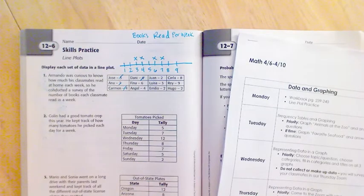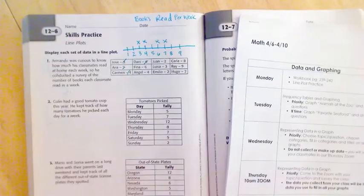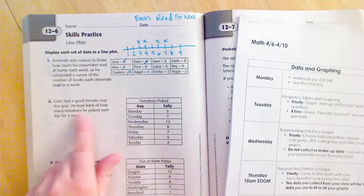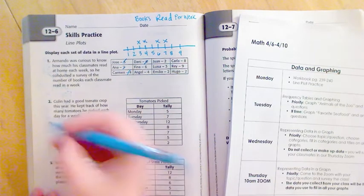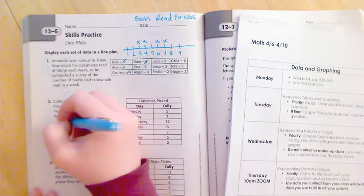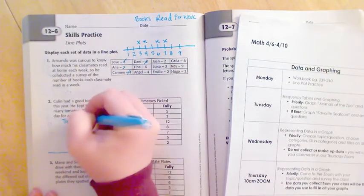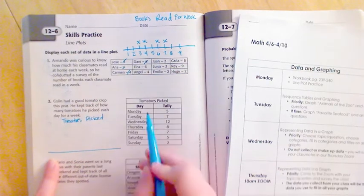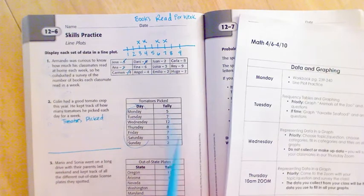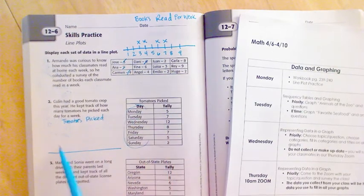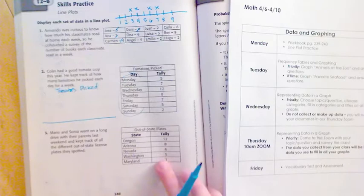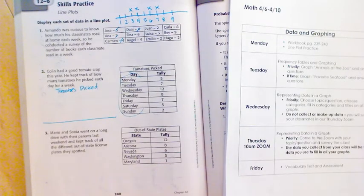Now this one I think you can figure out. Colin had a good tomato crop this year. He kept track of how many tomatoes he picked each day for a week. Remember, here's your plot, give it a title: tomatoes picked. I would put the days at the bottom and then tallies - how many. So on Monday I would do five X's, Tuesday seven X's, Wednesday twelve, and then you're gonna do three all on your own.